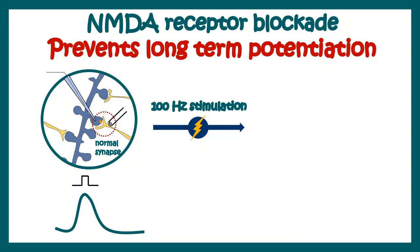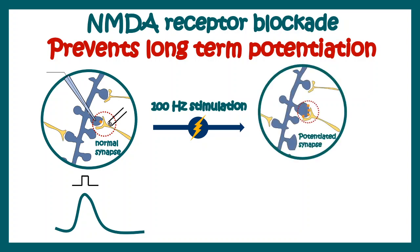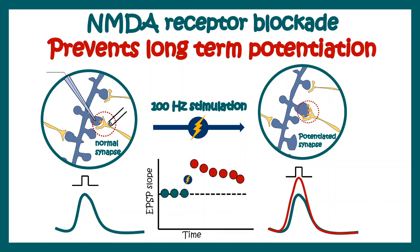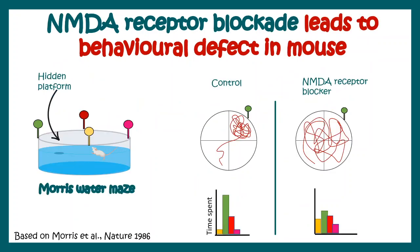If you do a 100 Hz tetanic stimulation and then record from the same synapse again with the same amount of current as before, instead of getting the same amplitude response, you now get an augmented or boosted response. This is known as synaptic potentiation. If this potentiation lasts for a long time, it is known as long-term potentiation. You can also plot the slope of these postsynaptic potentials over time: just after tetanic stimulation, the slope increases and stays increased for a long time. Importantly, if we block NMDA receptors with a pharmacological agent, even after 100 Hz stimulation there is no potentiation, meaning NMDA receptors are really important for regulating synaptic strength.